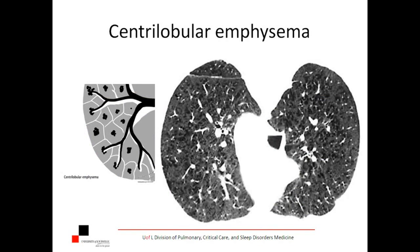Many of you have seen a picture somewhat like this if you've rotated on the pulmonary service and looked at CT scans. Here's a drawing of what's happening in this slice — you see a lot of darkness, all of these holes. These are secondary lobules destroyed by tobacco smoke particles. You can see the secondary lobule here, and these dots demonstrate how the disease is destroying from centrally moving outward. This is why we call it centrilobular emphysema.